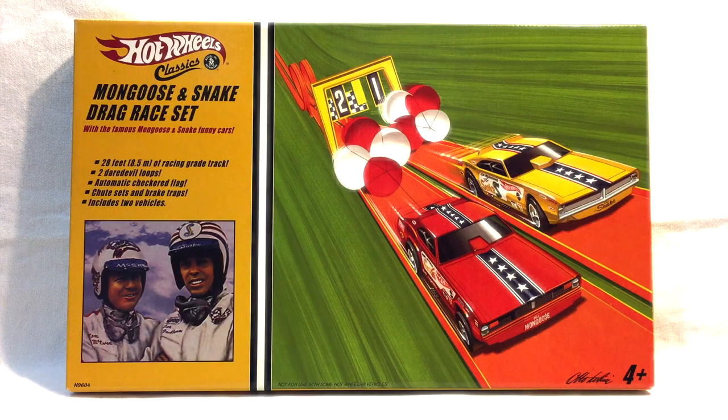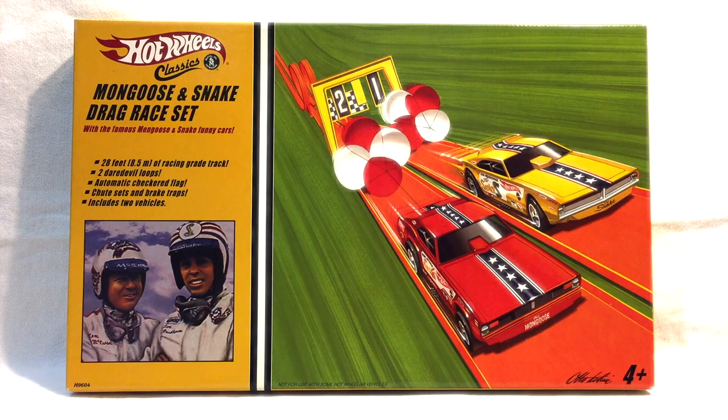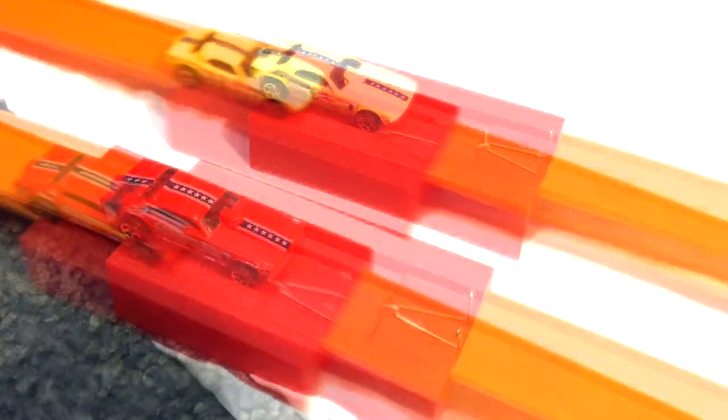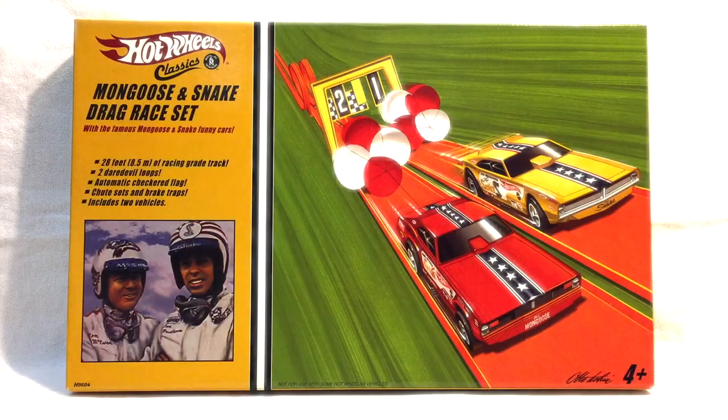All right everybody, today we are talking about the Hot Wheels classics mongoose and snake drag race set with 28 feet of racing grade track, two daredevil loops, automatic checkered flag, chute set and brake traps, two cars included, and this is a 2006 remake of the 1969 version.